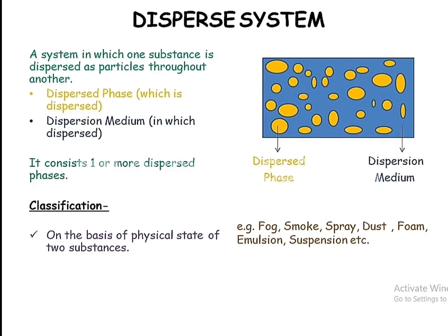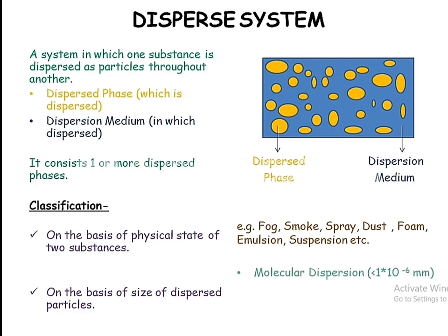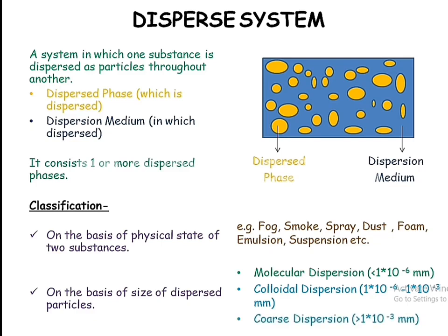The second classification is on the basis of the size of dispersed particles, which is subdivided into three categories. First, molecular dispersion, in which particle size is less than 10⁻⁶ mm. Second is colloidal dispersion, with particle size ranging from 10⁻⁶ to 10⁻³ mm. The last category is coarse dispersion, where the particle size is larger than that of colloidal dispersion.